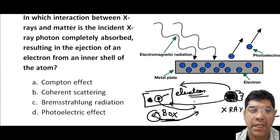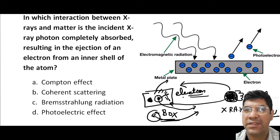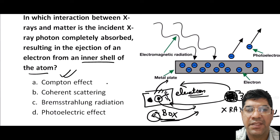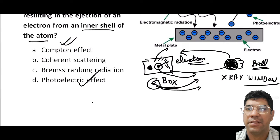The Compton effect would be like throwing the big ball very hard so it breaks the window and pieces fall out. In the photoelectric effect, the x-ray photon gives all its energy to the innermost shell of the atom — just like throwing a big ball with enough force to open the window and send the bouncy ball flying. The x-ray photon gives its energy to the inner shell electron, causing it to leave the atom.